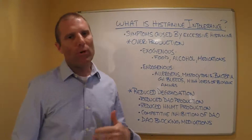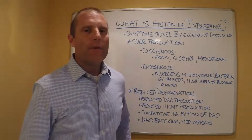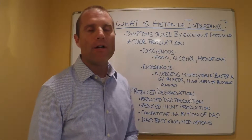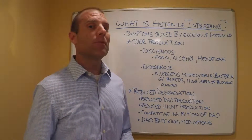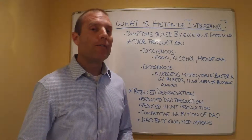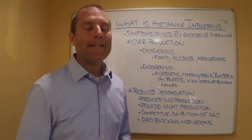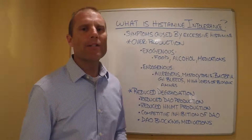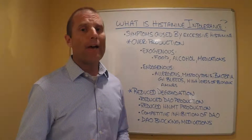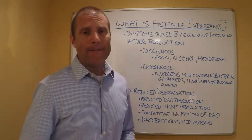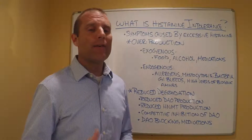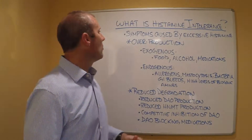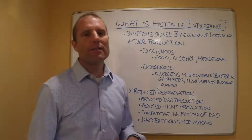Today we're going to continue our discussion on histamine and histamine intolerance. We talked last time about what histamine intolerance is — it's simply an overproduction of histamine, more than the body can handle, creating a number of symptoms. Those symptoms could affect the central nervous system: dizziness, vertigo, headaches, and migraines. It can impact the skin with itchiness, hives, and allergic reactions. Patients can have asthma, exercise-induced asthma, GI symptomatology, brain fog, and fatigue.